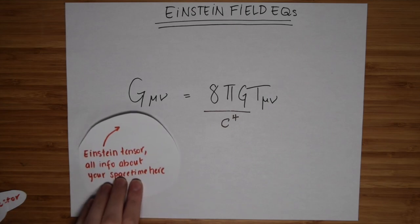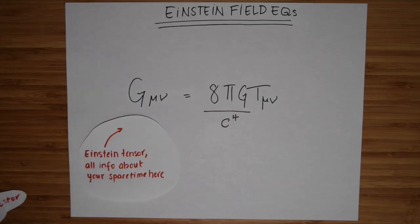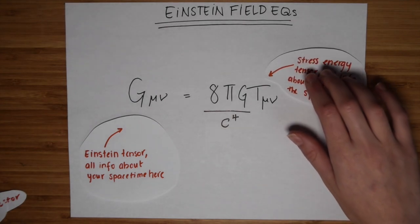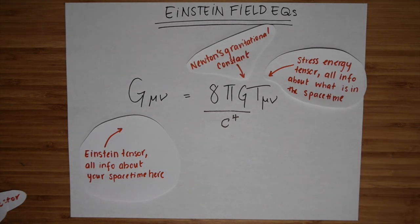G mu nu is the Einstein tensor and encodes all of the information about our metric, about our spacetime. T mu nu encodes all of the information about what's in our space, and this G over here is just Newton's gravitational constant. Altogether, these 16 equations, and yes, there really are 16 of them here, perfectly describe how mass energy warps spacetime and subsequently how mass energy behaves in that warped spacetime.